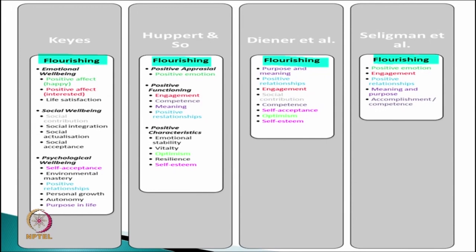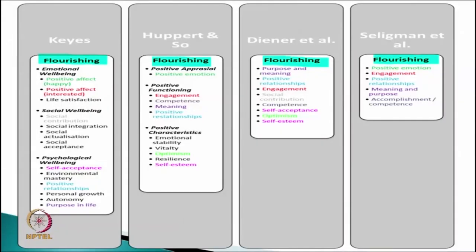That is why when we are reading research papers, we should know what is the definition of flourishing, happiness, well-being, or mental health. That is very important because different scholars address it differently.